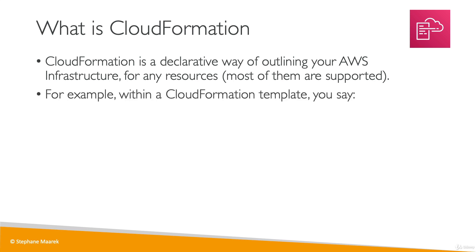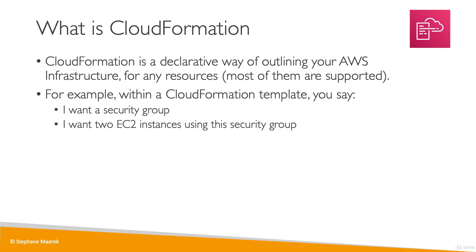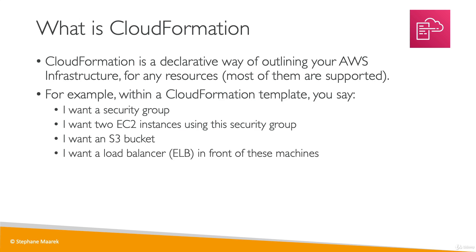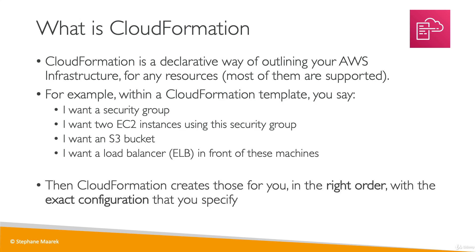To give you a concrete example, in CloudFormation you would say: I want a security group, I want two EC2 instances that will be using that security group, I also want an S3 bucket, and I want a load balancer in front of all these machines. Then CloudFormation automatically creates all these things for you, in the right order, with the exact configuration that you specify.